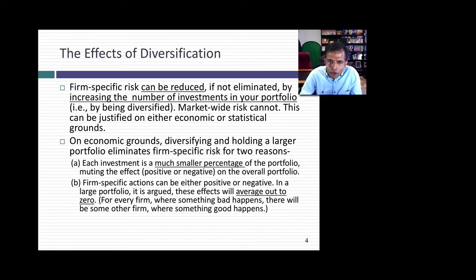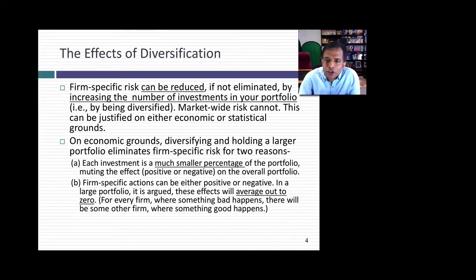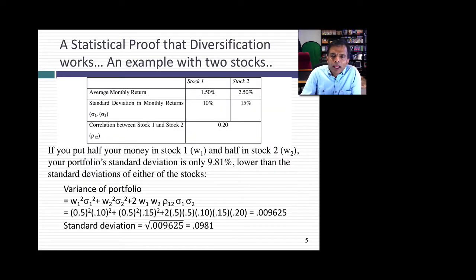There are two arguments for why diversification reduces firm-specific risk. The weaker argument is that every investment becomes a smaller part of your portfolio, so you feel the pain less. The stronger argument is that as you spread across multiple companies, risk affecting one or a few companies averages out — you might not feel the pain at all. The argument for diversification is simple but can also be made statistical, and there is a benefit to looking at the statistical basis.